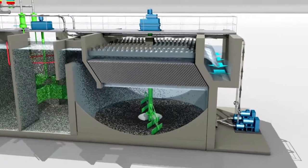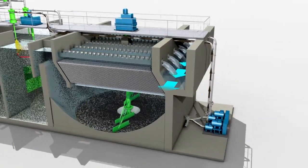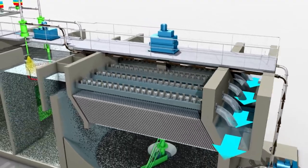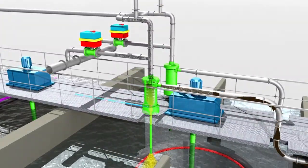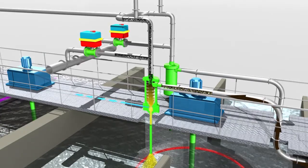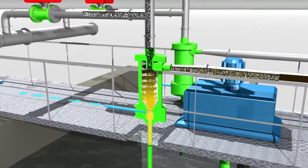The micro sand ballasted flocks are scraped to the center pit of the settling tank, from which they are pumped to a hydrocyclone. Pumping energy is converted into centrifugal forces, causing the light activated carbon to separate from the heavy micro sand.